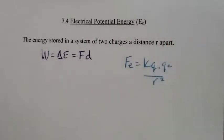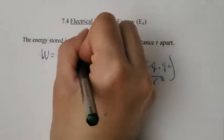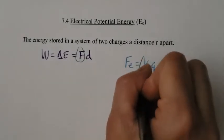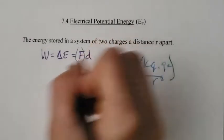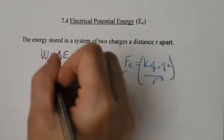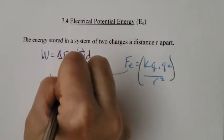What I'm going to do is substitute this in for F. I'm going to change this F with the electrical force. So when I do that, I end up with KQ1Q2 over R squared.